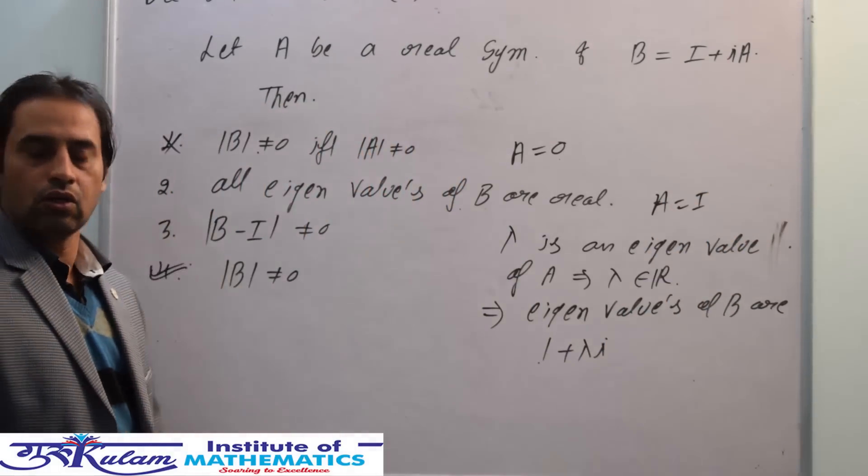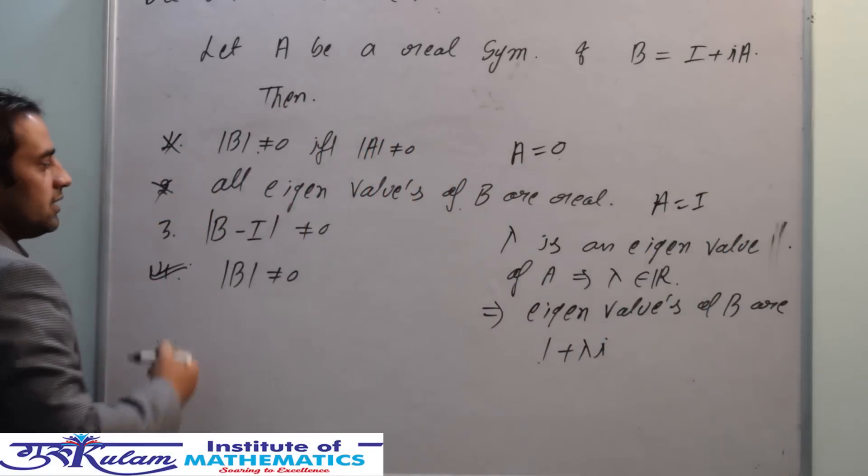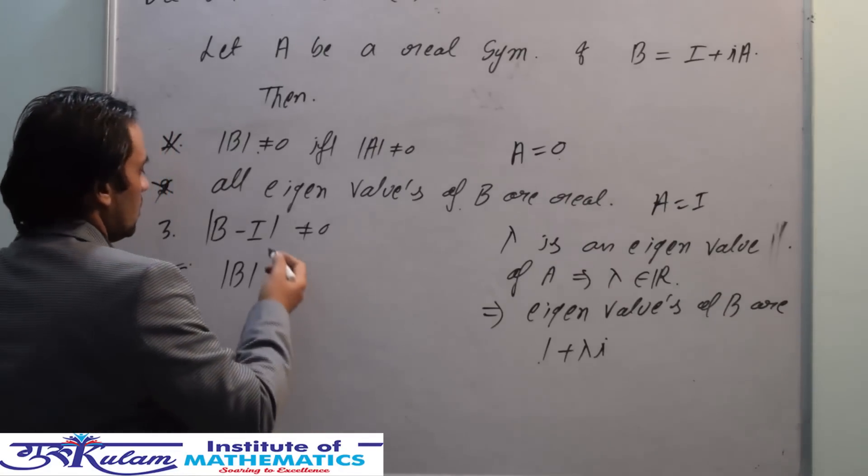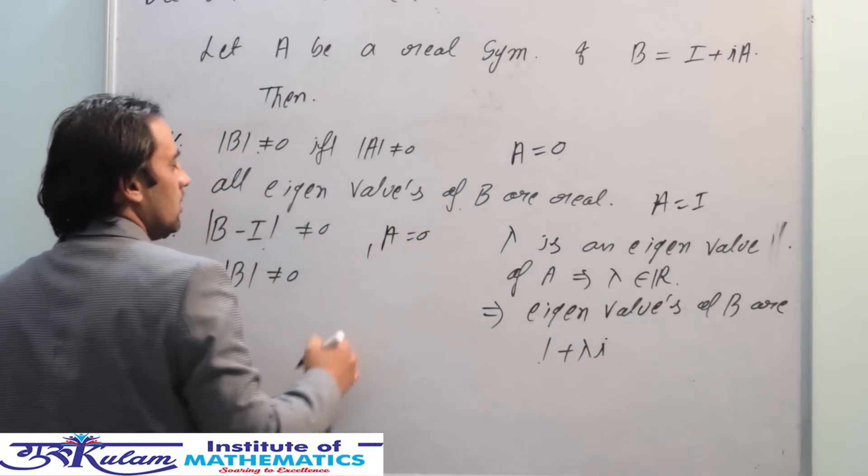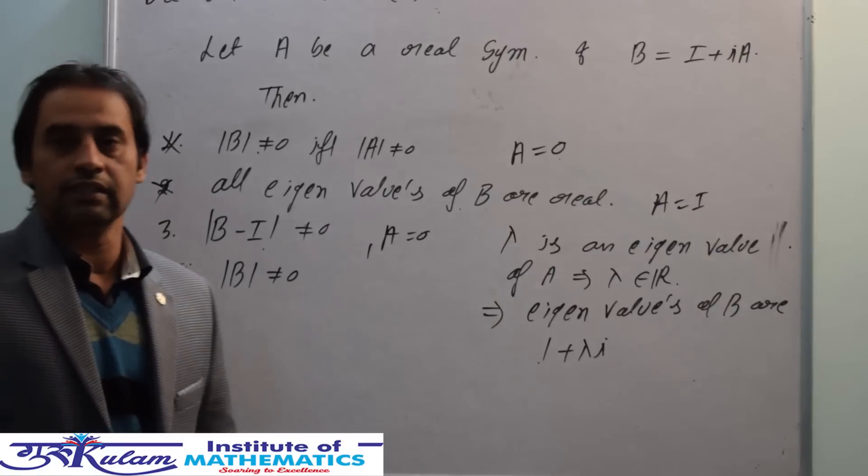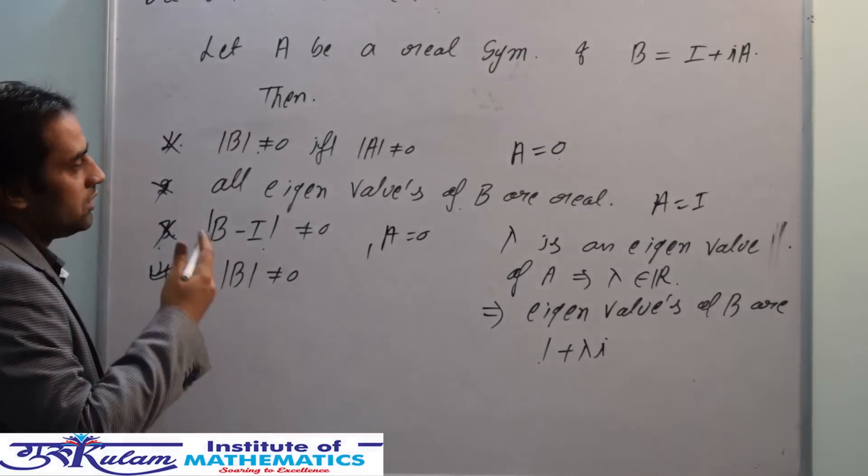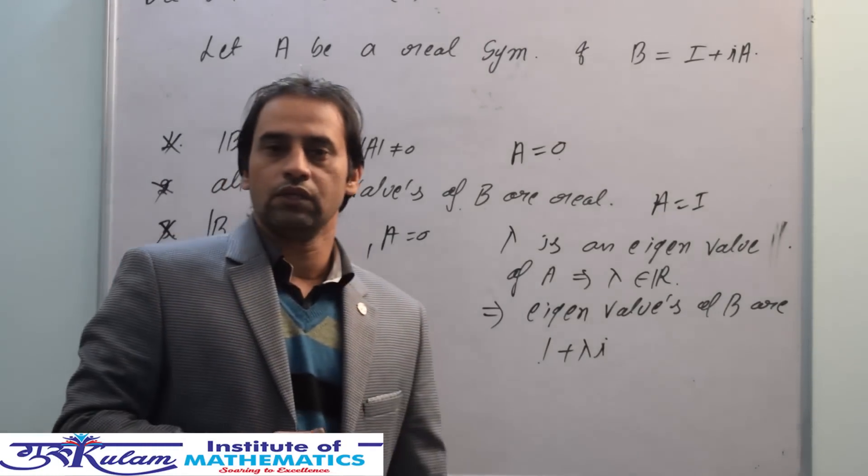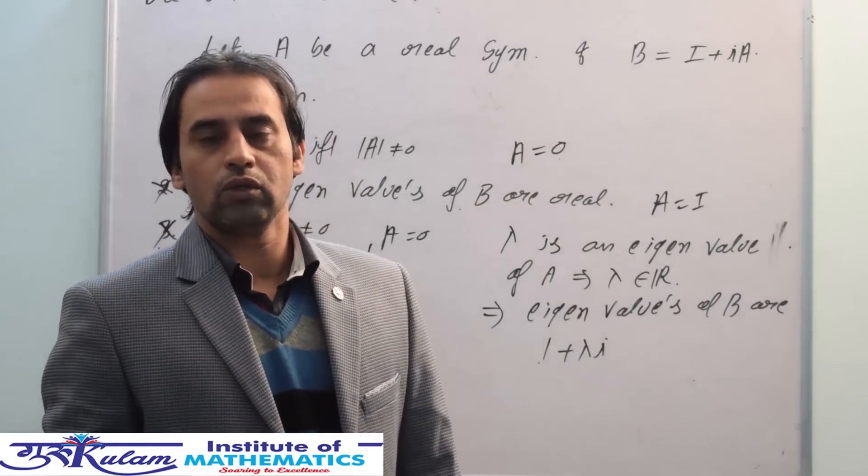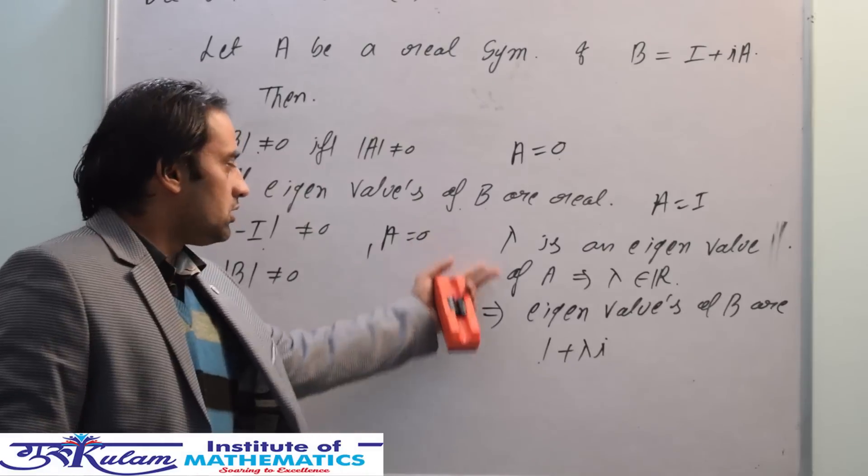If A equals the zero matrix, then B minus I is also the zero matrix, so option 3 is incorrect. These are counterexamples for options 1, 2, and 3. Option 4 must be correct, and this is how we solve it.